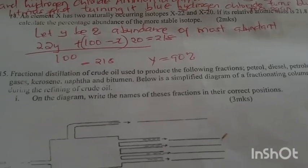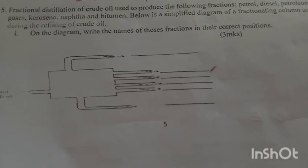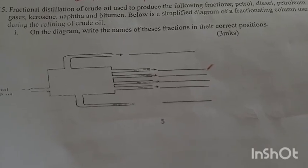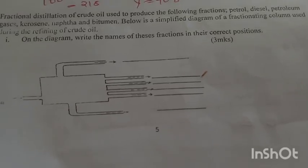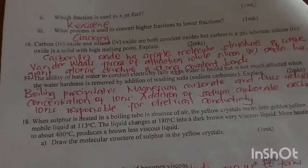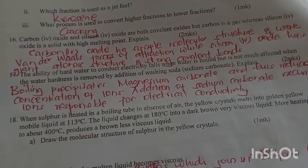Fractional distillation of crude oil is used to prepare the following fractions: petrol, diesel, petroleum gases, kerosene, and bitumen. Below is a simplified diagram of the fractionating column used. Write the names of the fractions in the correct position. Which fraction is used as jet fuel? It's kerosene. What process is used to convert higher fractions to lower fractions? That is cracking.